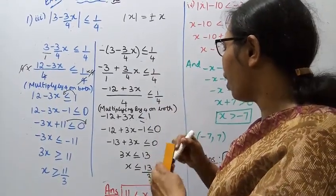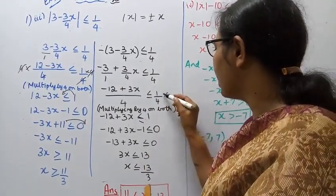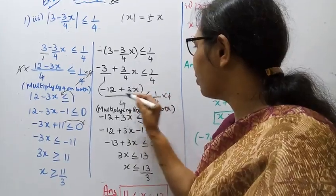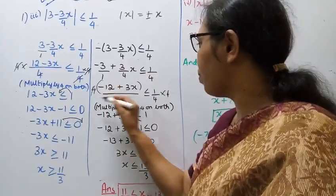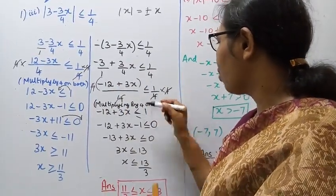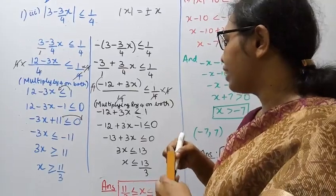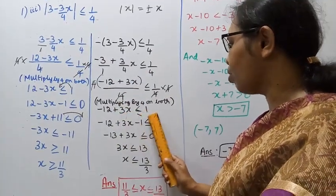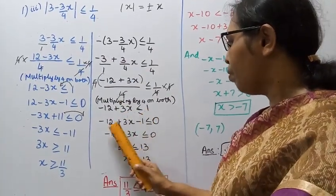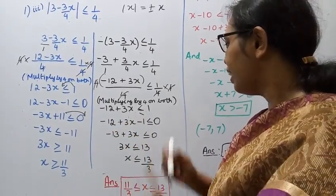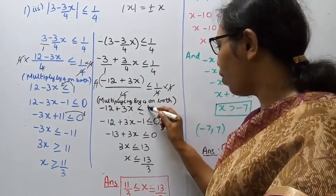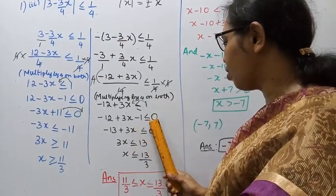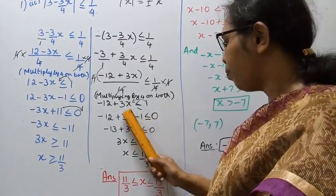Multiplying by 4 on both sides, the 4s cancel. We get: minus 12 plus 3x less than or equal to 1. Moving minus 12 to the right: minus 12 minus 1 less than or equal to 0.